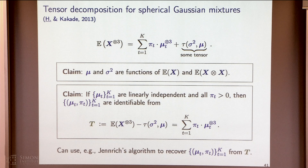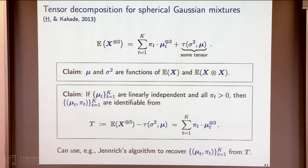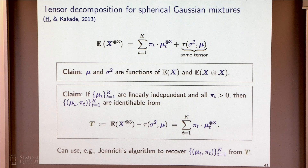To turn this into a learning algorithm, you have to actually estimate the moments, and you'd hope Jennrich's algorithm works when you don't have the exact tensor. If the means are linearly dependent, it may be non-identifiable information-theoretically — Misha has an example where you might need lots of data to distinguish between two different mixtures. They would still be identifiable, just hard to distinguish. But perhaps the parameters are also close in some metric, so maybe you don't care about those cases.